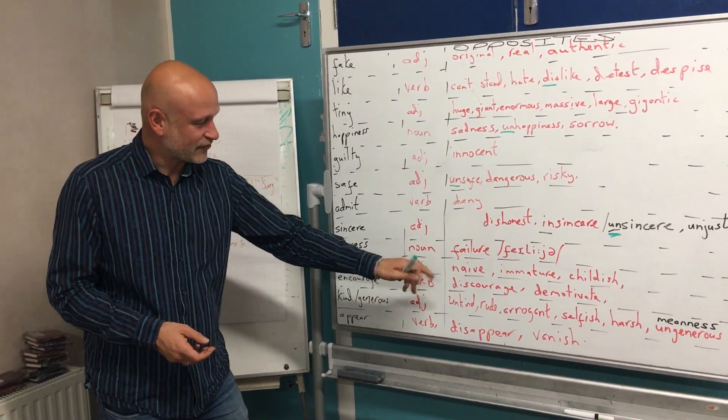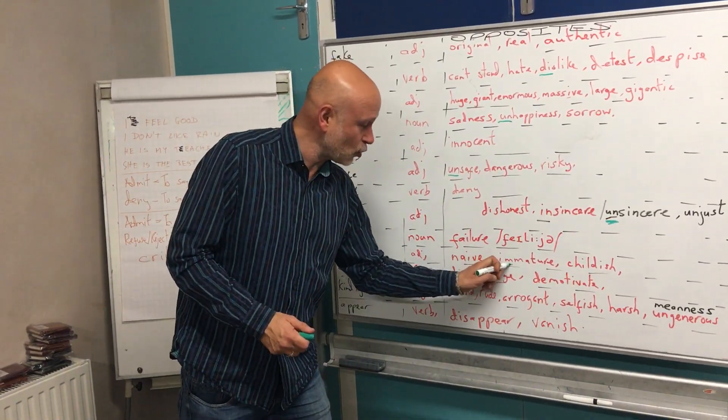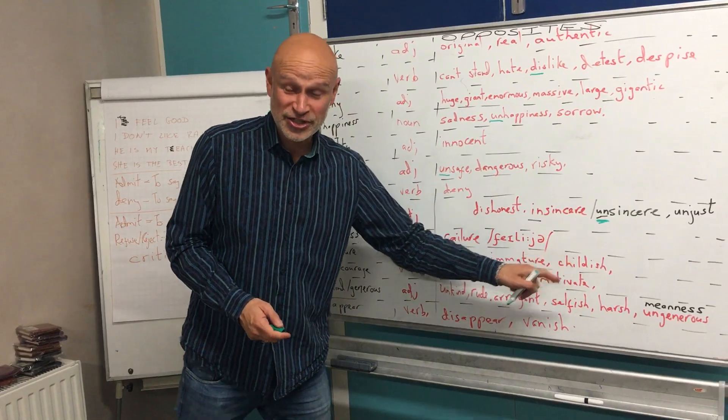Mature is an adjective. The opposite: naive, immature. Well done for your prefix. Childish. Well done.